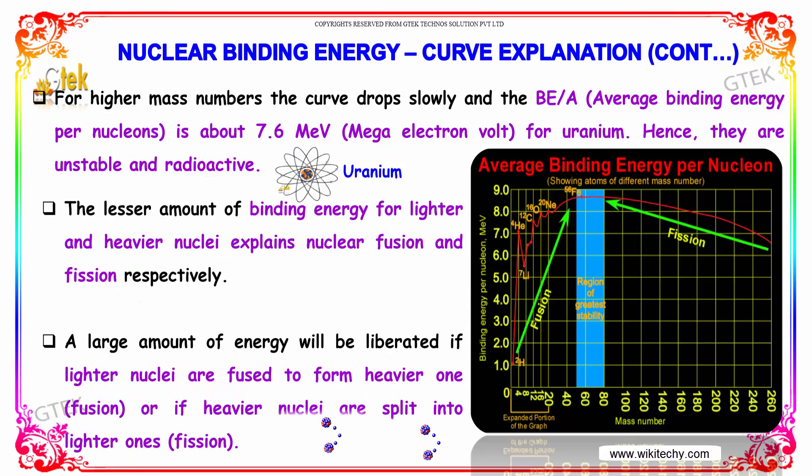For higher mass numbers, the curve drops slowly and the average binding energy per nucleon is about 7.6 mega electron volt for uranium. Hence, they are unstable and radioactive.